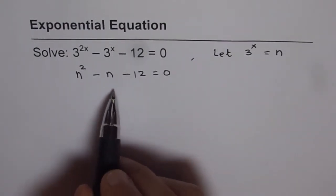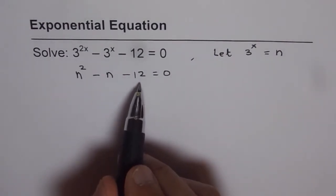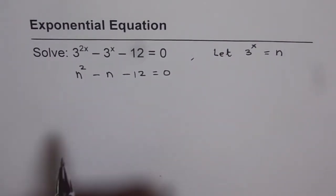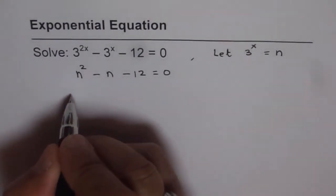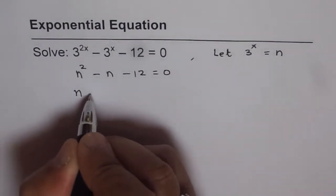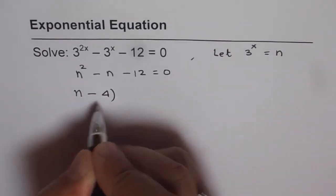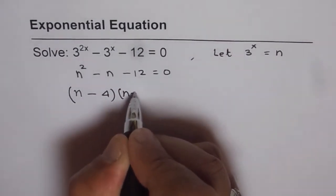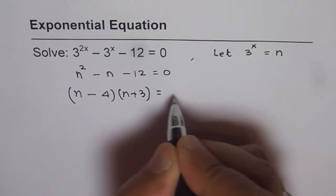We need two numbers whose product is minus 12 and sum is minus 1. So the numbers are 4 and 3. We can write this as n minus 4 times n plus 3 equals 0.